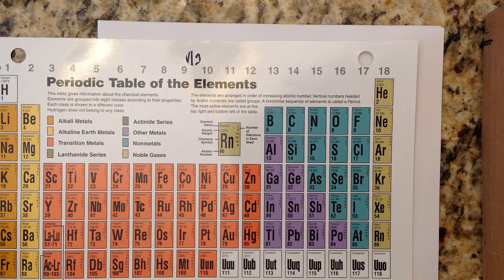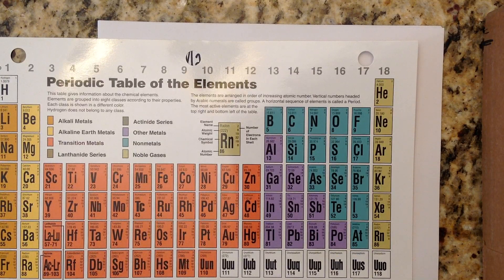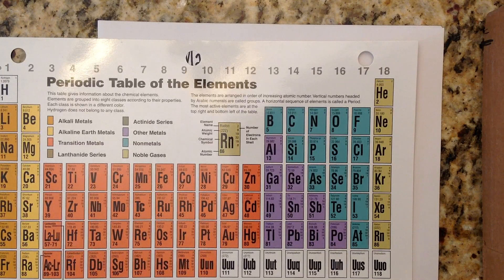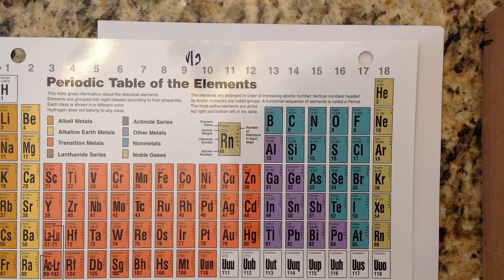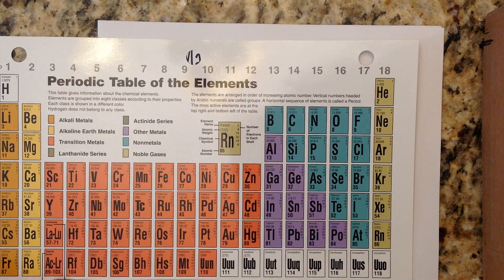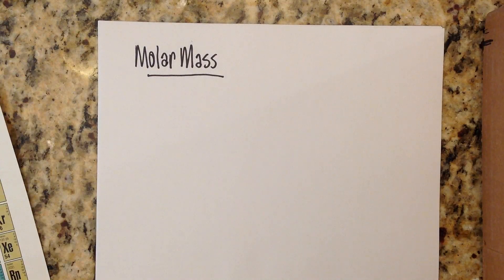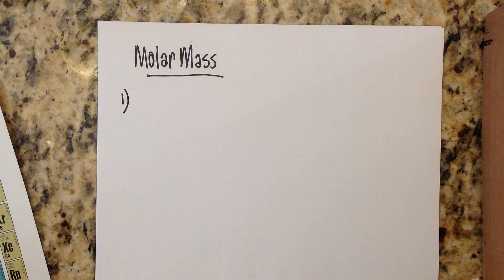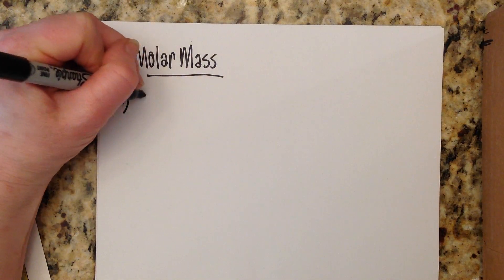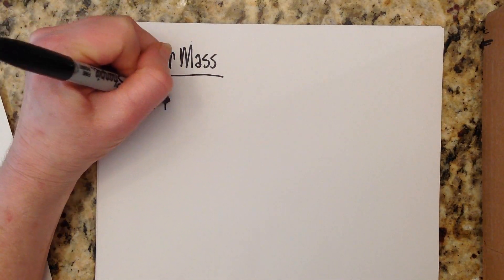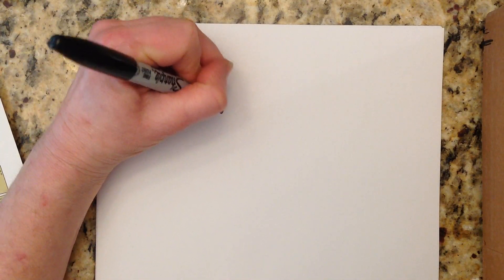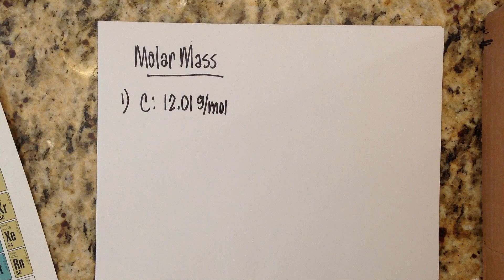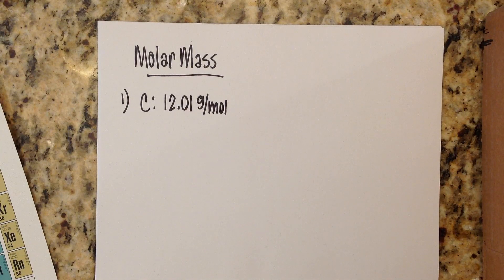The unit for molar mass is gram per mole, so that's the number that we're going to be working with today from the periodic table. You're going to need access to a periodic table so you can find the masses as needed. Now again, we're going to start real simply. Let's just say that I were to ask you what is the molar mass for carbon? Your answer would be 12.01 grams per mole.